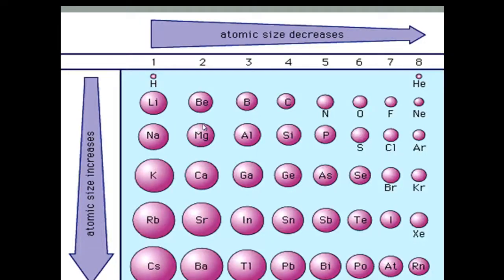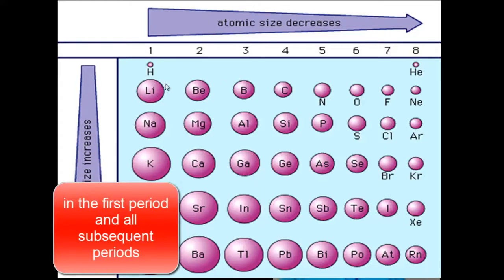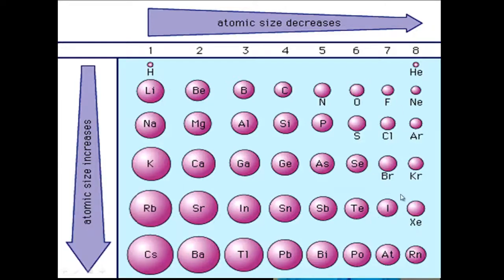Now, take a look. This is our first trend. The trend is atomic size. Notice that as you move across a period, the atoms become smaller and smaller. As you move down a group, the atoms become larger. I want you to remember that this is the atomic size. So, for atoms in the first period, they decrease in size, and as we move down any of the columns or groups, they increase in size.